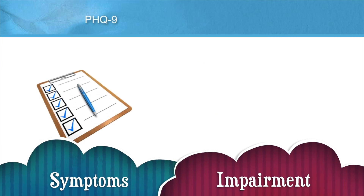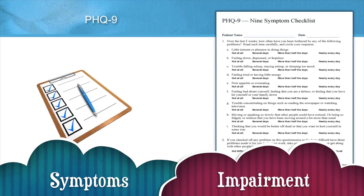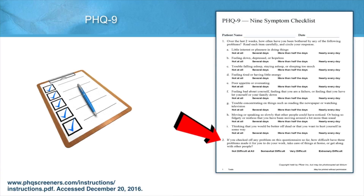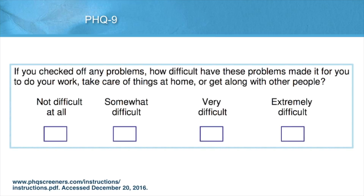The PHQ-9 not only asks about symptoms, but look at the bottom of the form — you'll see it also asks about impairment. The question asks: if you checked off any problems, how difficult have these problems made it for you to do your work, take care of things at home, or get along with people? Not only is this important in terms of helping us make a diagnosis, but also in terms of tracking symptoms.